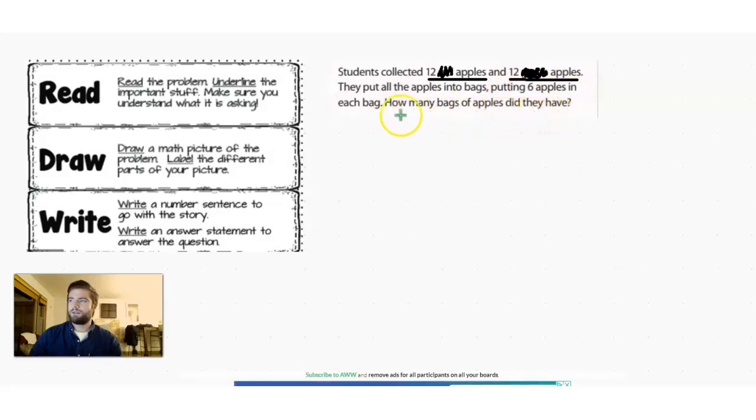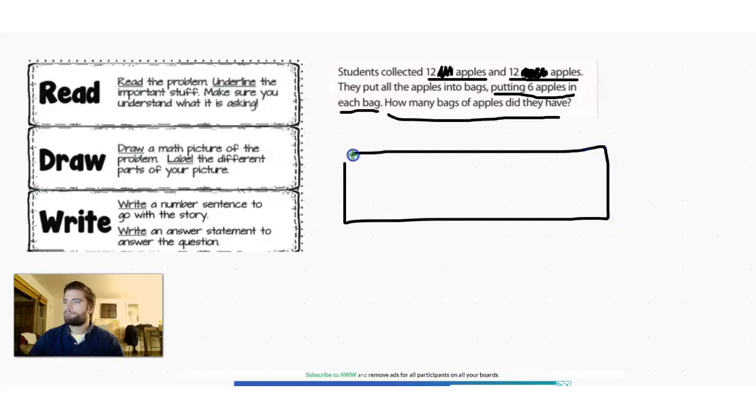So this one's a little bit tougher because it's asking about how many bags of apples. Six apples in each bag. So first, let's find out how many apples we have all together. And here, a tape diagram is going to work just fine again. So for our first tape diagram,